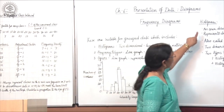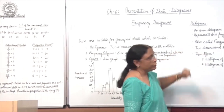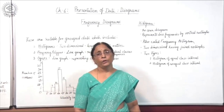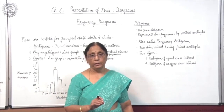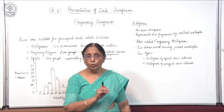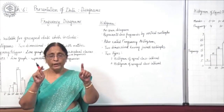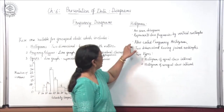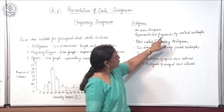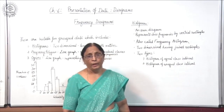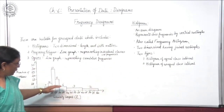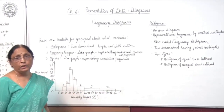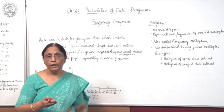Out of these 3, first we are taking histograms. What are the features of a histogram? This is an area diagram — why is it called an area diagram? Because both length and breadth (length and width) are taken into consideration, so the whole area is considered, and these are known as area diagrams. Second, these represent class frequencies by vertical rectangles — the frequencies are shown with the help of vertical rectangles.